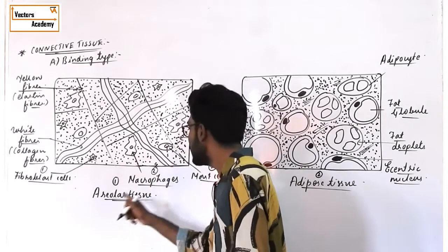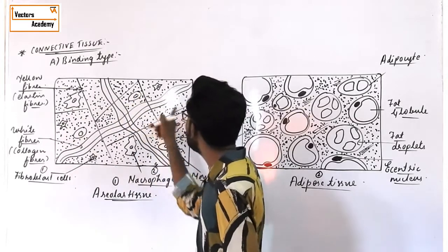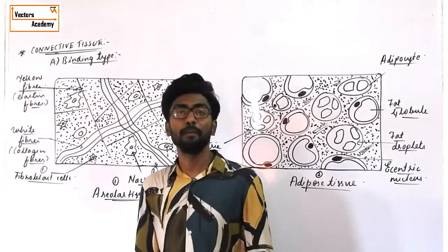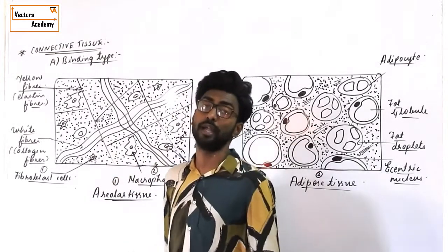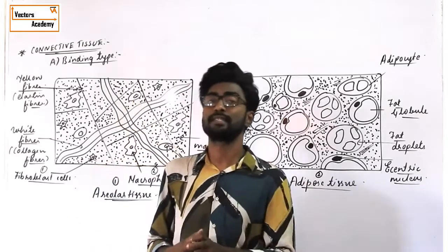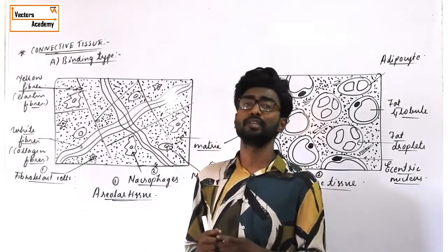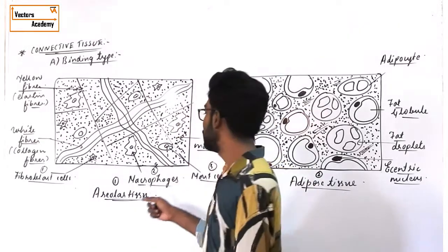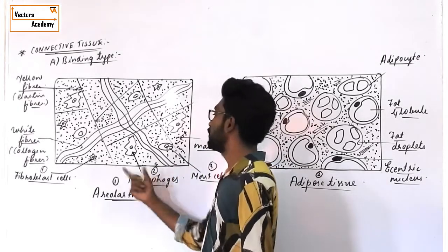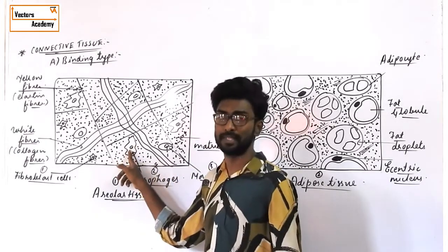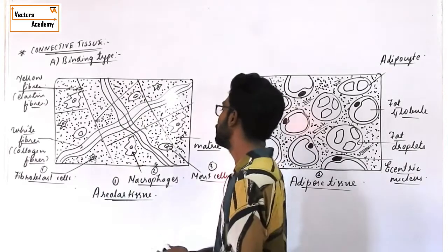The second type of cell is macrophages. Macrophages are amoeboid-shaped cells — irregular in shape and basically phagocytic cells. Phagocytic cells are cells which engulf or digest other cells in solid form. So macrophages are irregular, amoeboid-shaped cells and their major function is phagocytosis — they help in engulfing other cells in solid form.